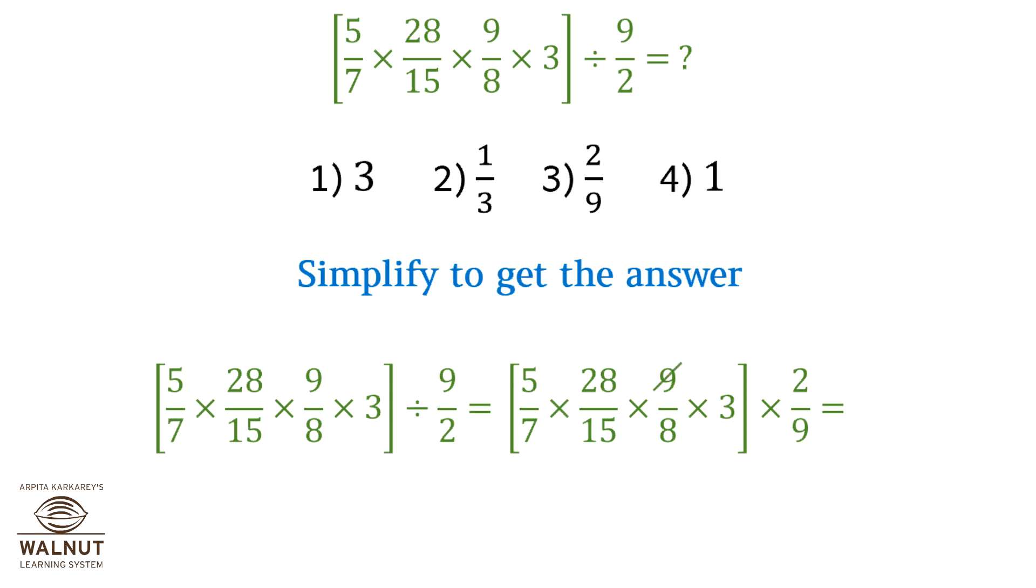So 9 and 9 get cut. 2 and 8, 4 times. 3 and 15, 5 times. 7 and 28, 4 times. 4 and 4 get cancelled, 5 and 5 get cancelled, and we are left with 1. So the correct answer is 1.